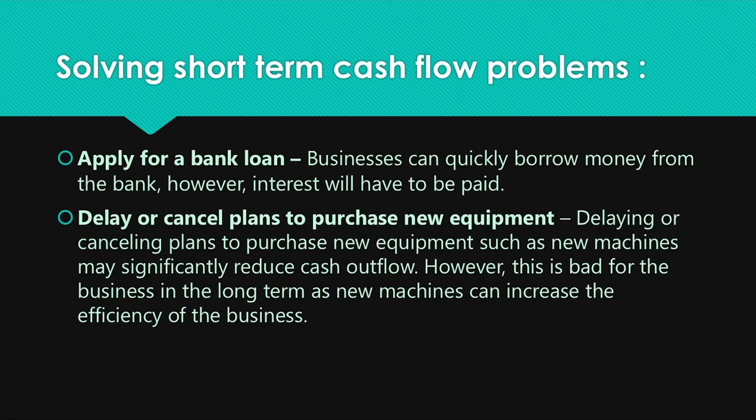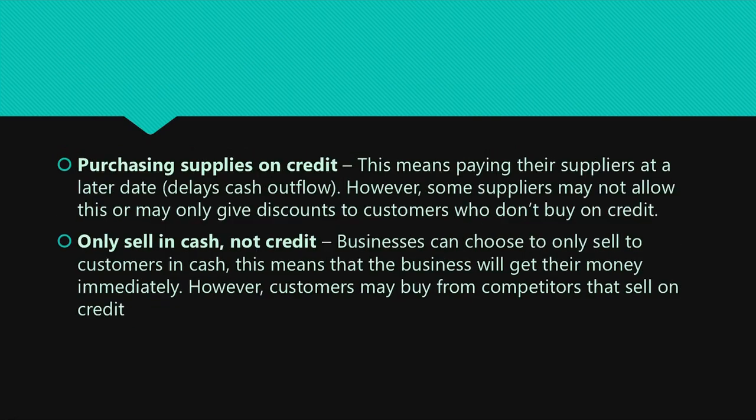There are methods to solve short-term cash flow problems. First, apply for a bank loan — businesses can quickly borrow money from the bank, but they will have to pay interest. Second, delay or cancel plans to purchase new equipment — this reduces cash outflow, but it can be bad for the business long-term as there will be less machinery and therefore less efficiency. Third, purchase supplies on credit — the business pays suppliers at a later date, delaying cash outflow and allowing time to gain more cash inflow. However, some suppliers may not allow this and may only give cash discounts to customers who do not buy on credit.